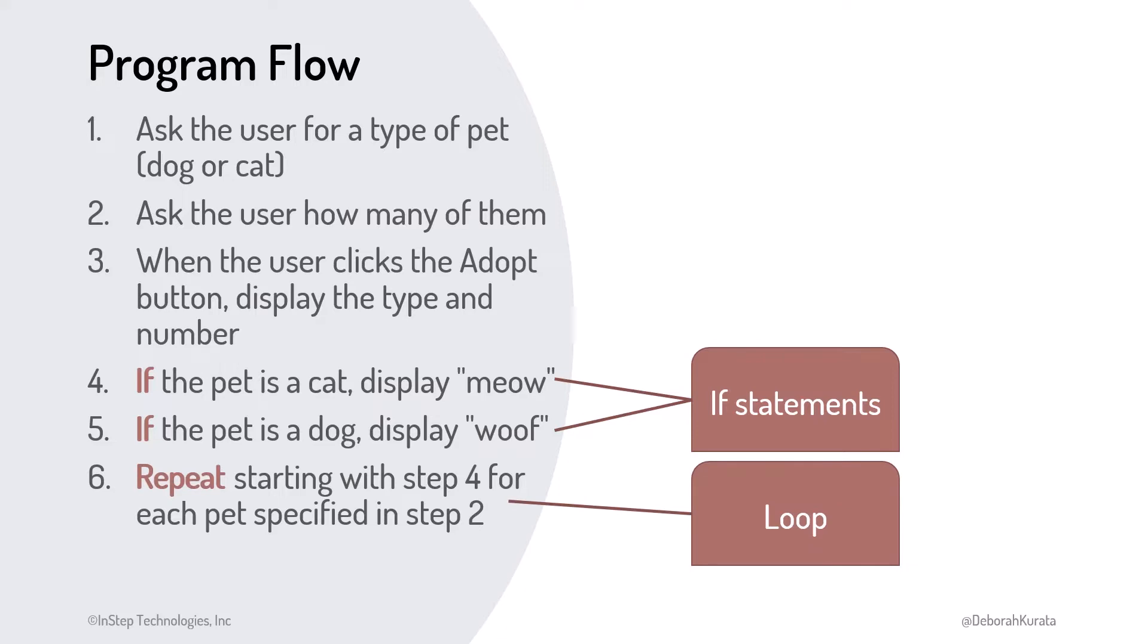And we have a repeat, or a loop in programming terms, when we want to repeat some instructions. We often provide some way to end the loop. In this example, the loop stops after displaying the text once for each pet.